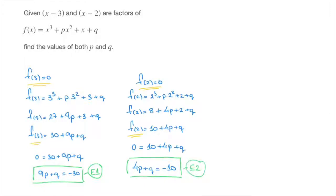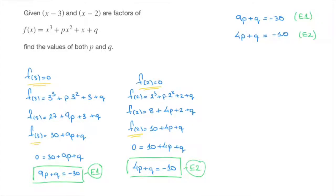And that's our second equation, which I'll call E2. At this stage, we have two equations with two unknowns and we can solve these simultaneously. We have 9p plus q equals negative 30 (E1), as well as 4p plus q equals negative 10 (E2). To solve this, I'm going to proceed by elimination, subtracting E2 from E1.